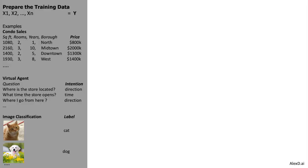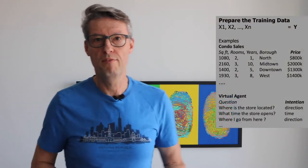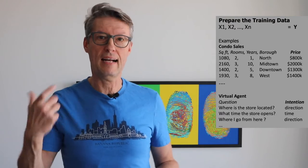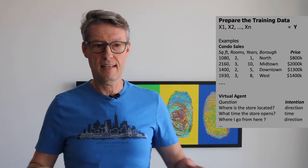Another example: if you want to build a virtual agent — a chatbot — what kind of training examples do you need? You have sentences, questions that someone can ask to a virtual agent, and the objective is to get an intention, a class. For example, 'Where is the store located?' maps to the intention 'direction.' 'What time does the store open?' maps to the intention 'time.' You can use that kind of data to train a model for a chatbot.